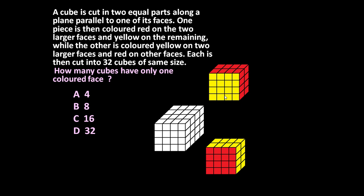Each piece is then cut into 32 small cubes — 32 from this piece and 32 from the other — giving a total of 64 unit cubes. So how many cubes have only one colored face?